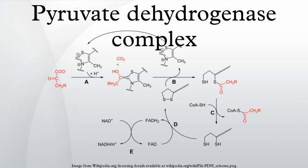During starvation, PDK increases in amount in most tissues, including skeletal muscle, via increased gene transcription. Under the same conditions, the amount of PDP decreases. The resulting inhibition of PDC prevents muscle and other tissues from catabolizing glucose and gluconeogenesis precursors. Metabolism shifts toward fat utilization, while muscle protein breakdown to supply gluconeogenesis precursors is minimized, and available glucose is spared for use by the brain.